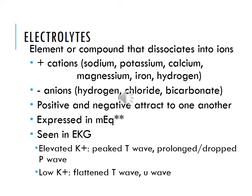An electrolyte is an element or compound that dissociates into ions. Cations include sodium, potassium, calcium, magnesium, iron, and hydrogen. Negative ions include hydrogen, chloride, and bicarbonate. Positive and negative ions attract one another, and electrolytes are expressed in milliequivalents. You can see changes on EKGs. If you have elevated potassium, you're going to have a peaked T wave and a prolonged, dropped P wave. If your potassium is low, you're going to have a flattened T wave and a U wave.